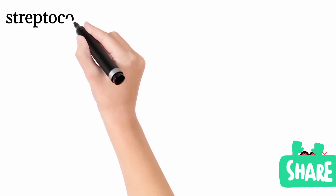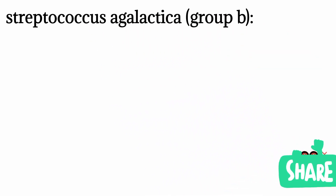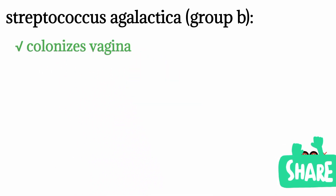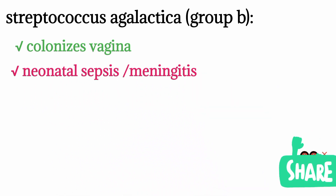The next category is Streptococcus agalactiae, which is group B beta-hemolytic Streptococcal species. The normal site of colonization of Streptococcus agalactiae is the vagina in females. It causes two diseases: neonatal sepsis, where the infection spreads into the bloodstream of the newborn affecting multiple organs, and neonatal meningitis in the newborn.